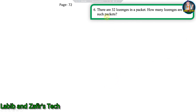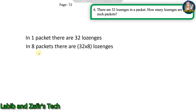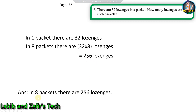Sixth question: there are 32 logens in a packet. How many logens are in eight such packets? In one packet there are 32 logens, so in eight packets there are 32 into 8 logens. 8 into 2 is 16, carry 1; 8 into 3 is 24 plus 1 is 25, giving 256 logens. Answer: in eight packets there are 256 logens.